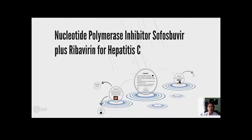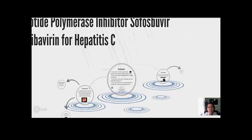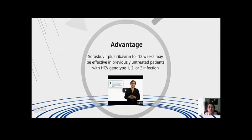Regarding nucleotide polymerase inhibitors — specifically Faldaprevir plus ribavirin for Hepatitis C — the advantage of this treatment is that Faldaprevir plus ribavirin for 12 weeks may be effective in previously untreated patients with Hepatitis C genotype 1, 2, or 3 infection.